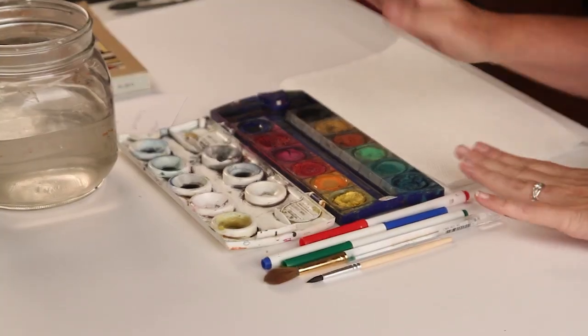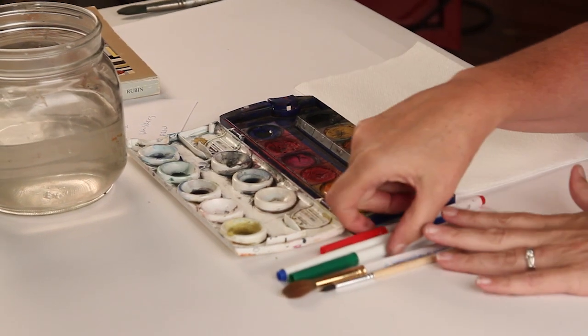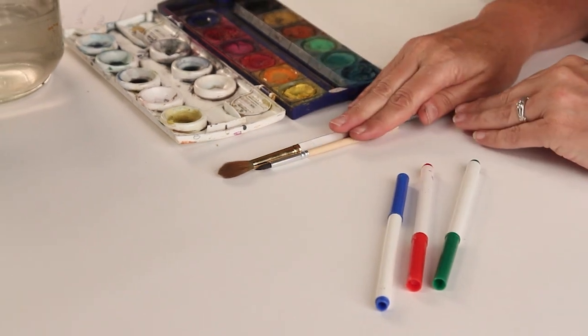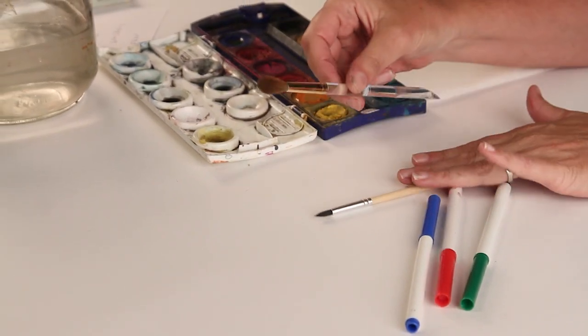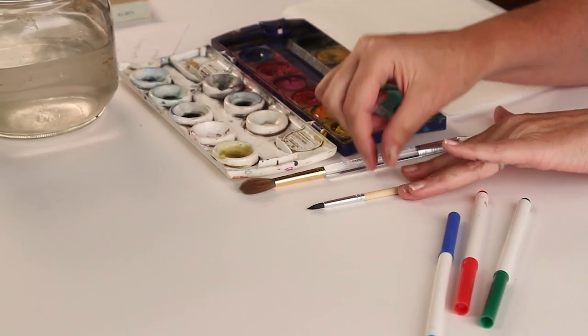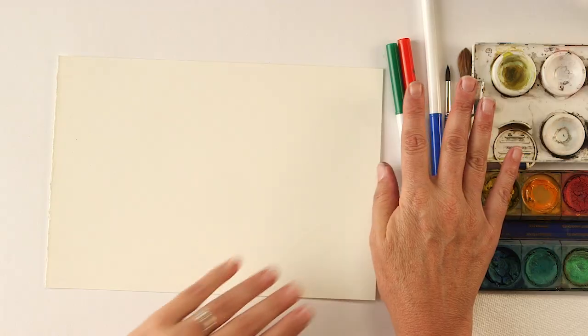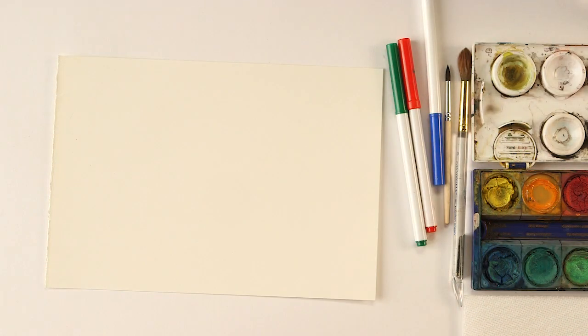What you need today are some watercolors, three colors of markers, and that can be any colors you want, and some paint brushes. I have a round brush that kind of will hold a lot of water, and then a smaller brush that's for detail. Then you'll need a piece of watercolor paper, and this is about letter sized.